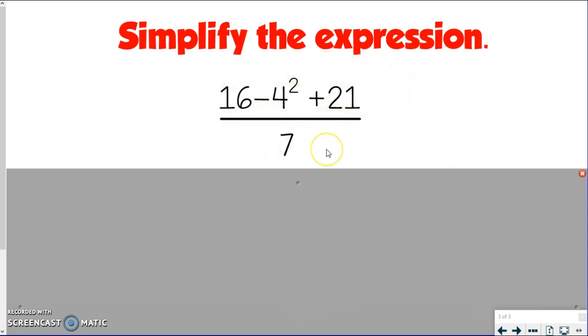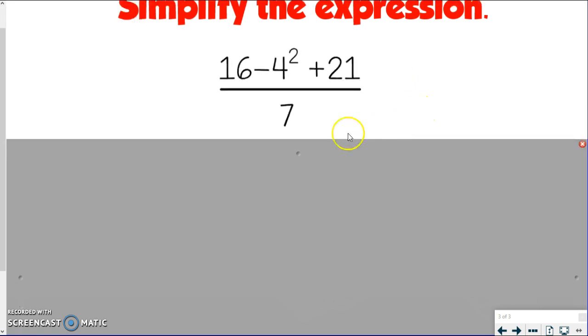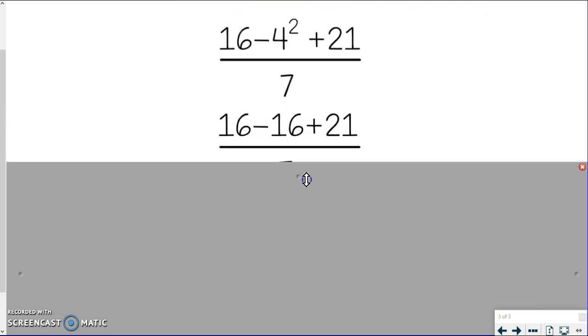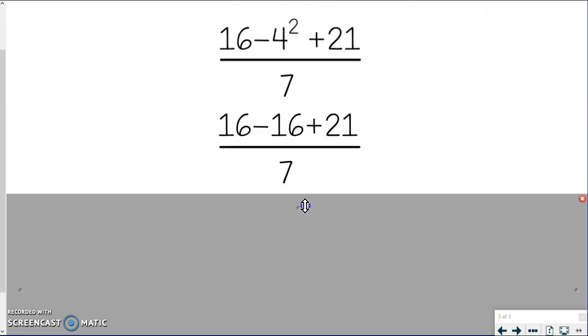And if we did have more than one thing on the bottom, we'd also want to simplify all that first. And the very last thing we'll do is deal with the fraction bar. So you'll see what I mean as we go through. So I'm going to start at the top and exponents would come before any of those other operations anyway. So I'm going to do 4 squared or 4 to the second power, which is 16. So I get 16 minus 16 plus 21 over 7.